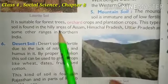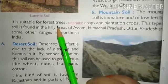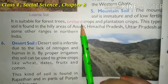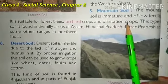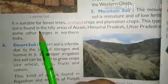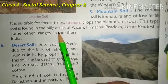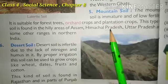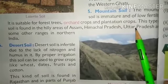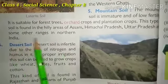Mountain soil is suitable for forest trees, orchard crops, and plantation crops. It is useful where forests grow without needing much water, for fruit orchards, and for plantation crops. This type of soil is found in hilly areas like Assam, Himachal Pradesh, the hilly parts of Uttar Pradesh, and some other ranges in north-eastern and northern India.